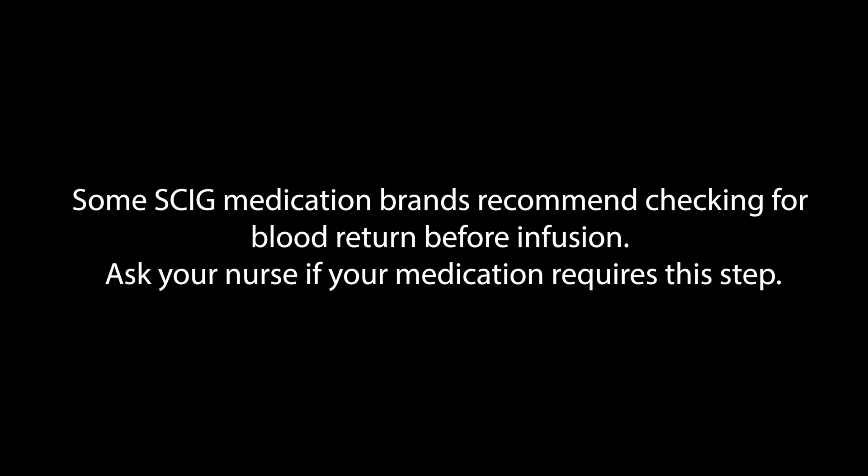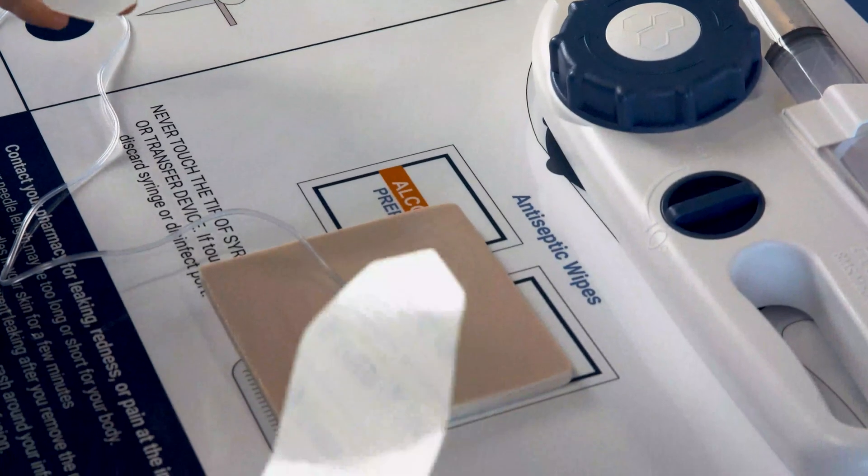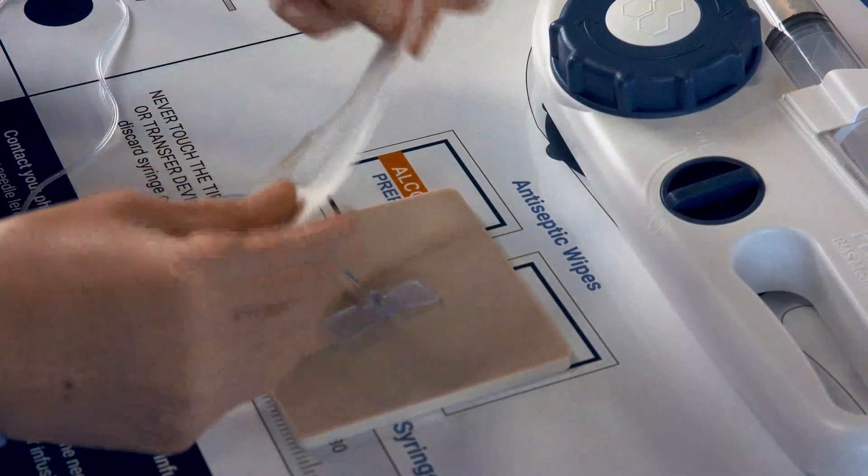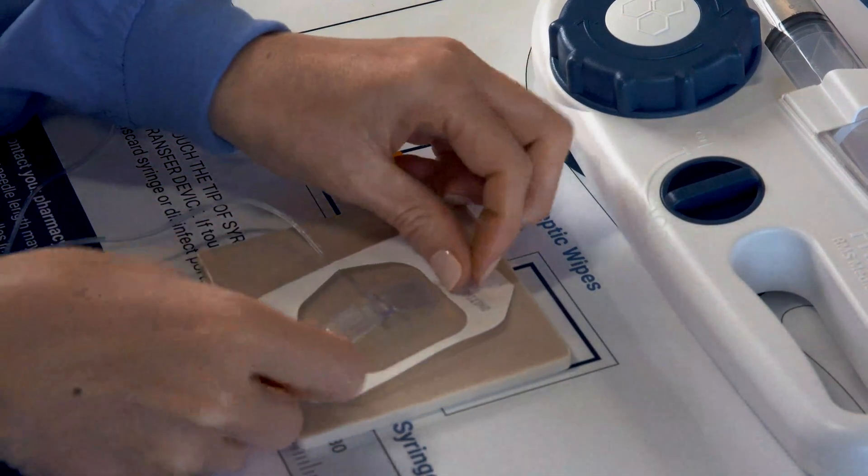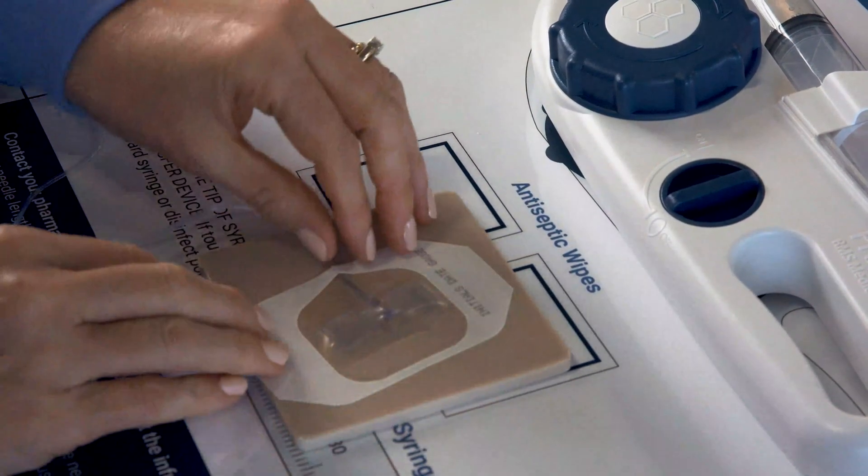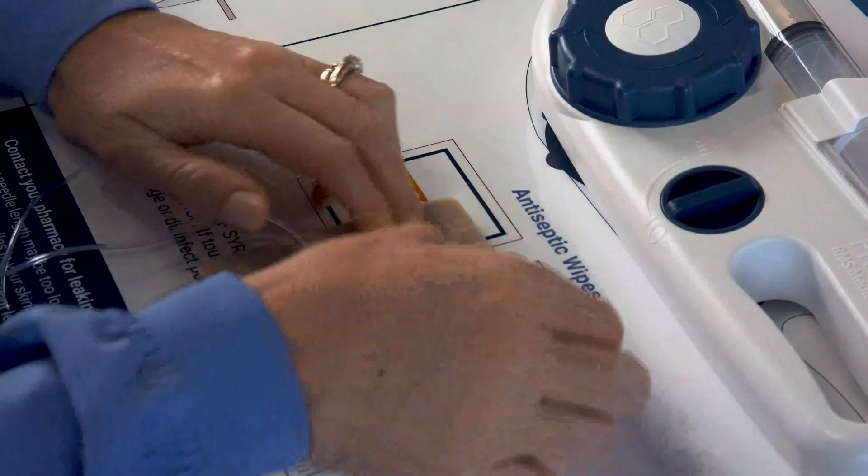Some SCIG medication brands recommend checking for blood return before infusion. Ask your nurse if your medication requires this step. Then apply the transparent dressing over the needle like this. Repeat for each site required for your infusion.